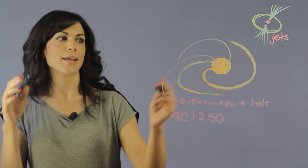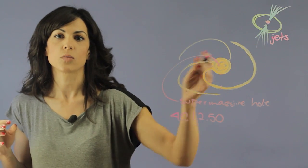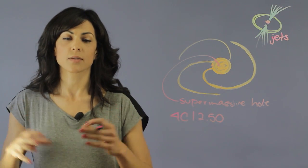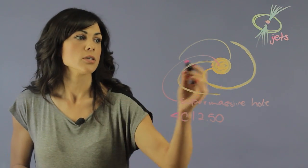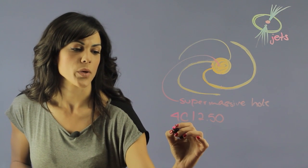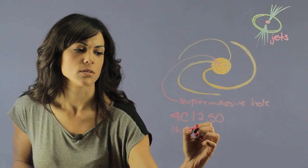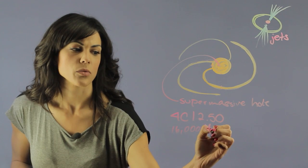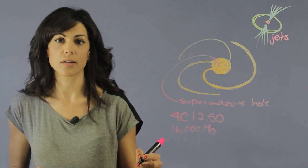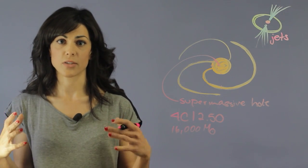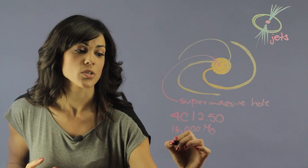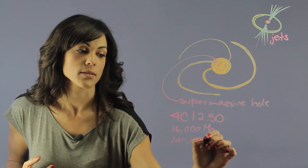So what we saw is that at the end of the jets, we saw these large clouds of gas that are being ejected from the galaxy. So in one end, we have about 16,000 solar masses. So 16,000 times the mass of the sun, these giant clouds that are being ejected. And on the other side, we saw actually 140,000 solar masses.